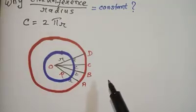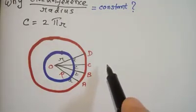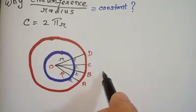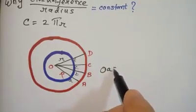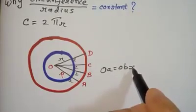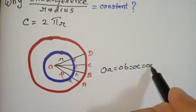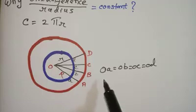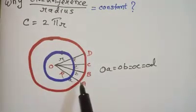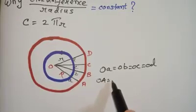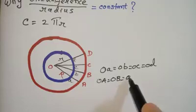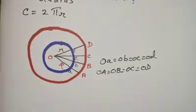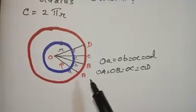Now if you notice that because they are equidistant from each other, for the smaller circle I can write OA equals OB equals OC equals OD. And for the bigger circle, the larger radius OA equals OB equals OC equals OD as well. So as far as the figures are concerned, because of equidistance they are all equal to each other.